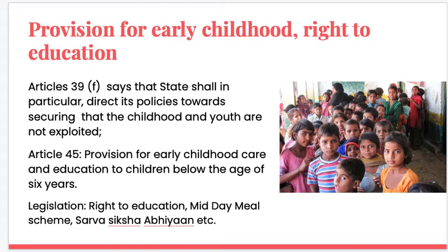Article 45 further ensures that children below the age of 6 are given early childhood care and education. This directive was changed by the 86th Constitutional Amendment of 2002. Originally, it made a provision for free and compulsory education for all children until they complete the age of 14 years, which was enacted as the Right to Education — popularly known as RTE.